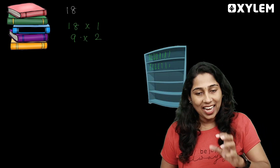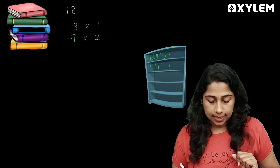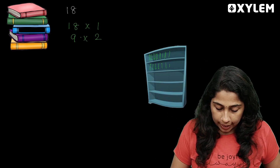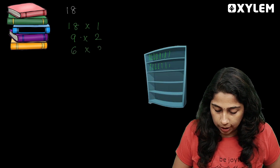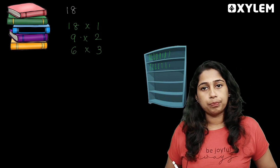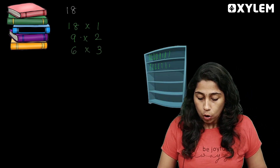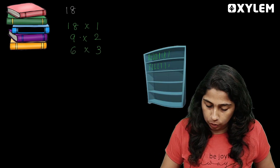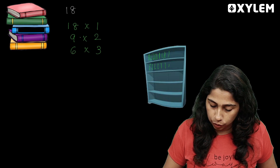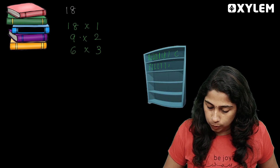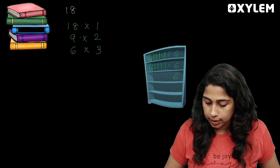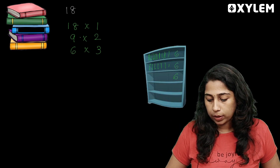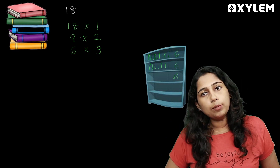I just arranged 6 books across 3 shelf sections. Great! You put them in three shelves — 6 books on each of the 3 shelves. Here it is, here it is, here it is, and here it is. In total: 18 books.